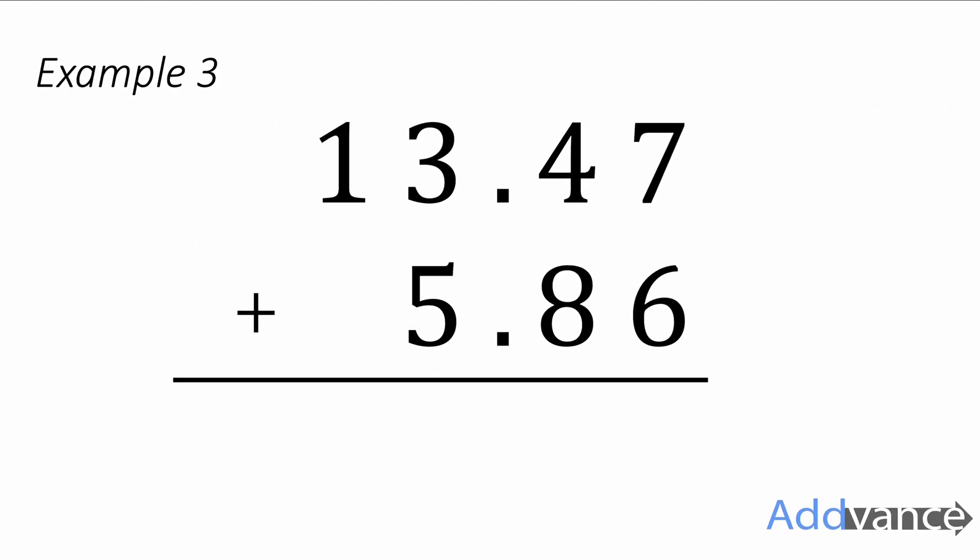Finally, let's look at example three and this one has decimals. Whenever you've got decimals, the easiest way to line up numbers with decimals is to line up the decimal column. So I've written this here, 13.47 plus 5.86. I'm going to add those together.